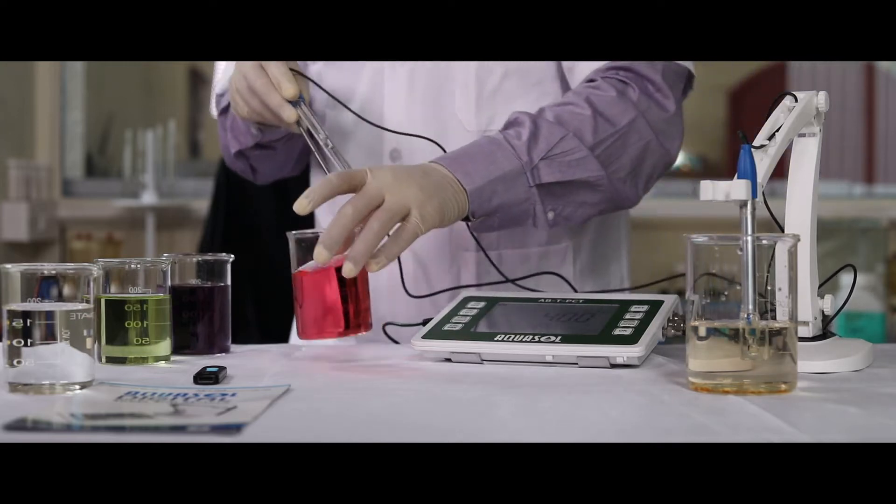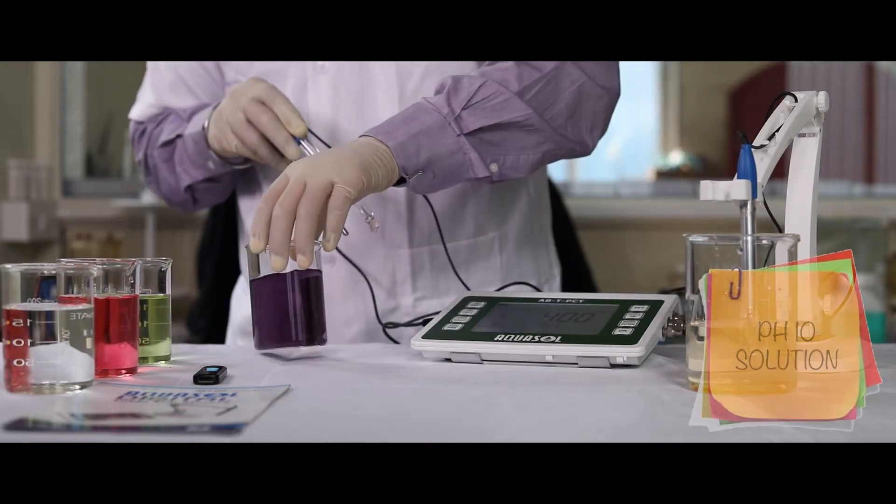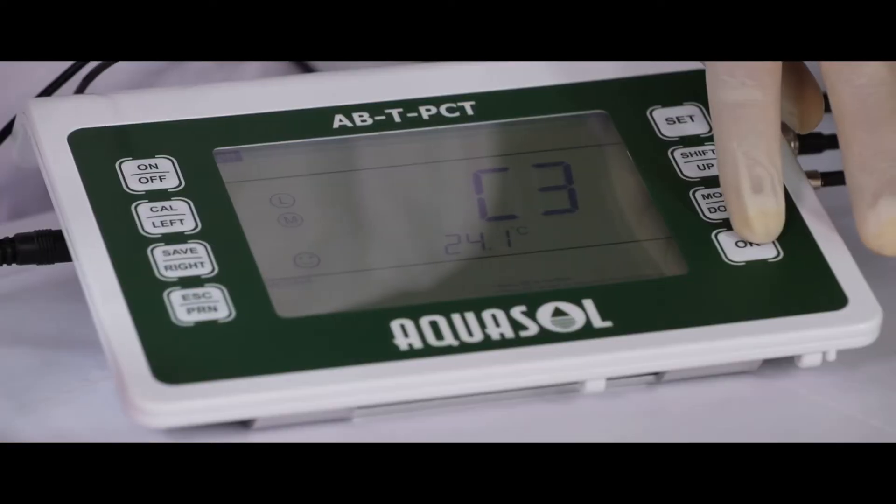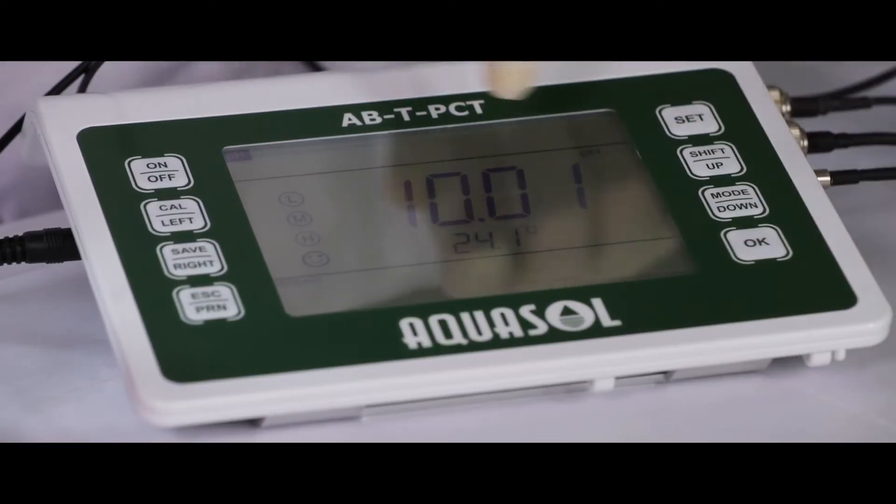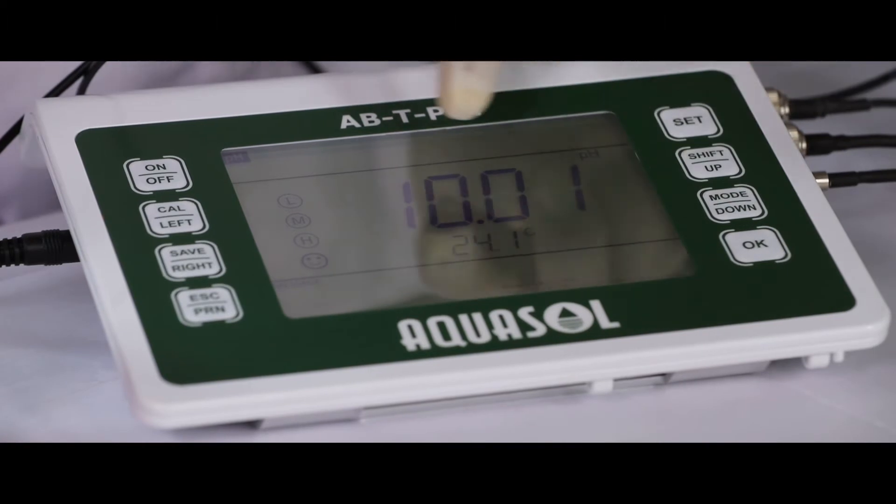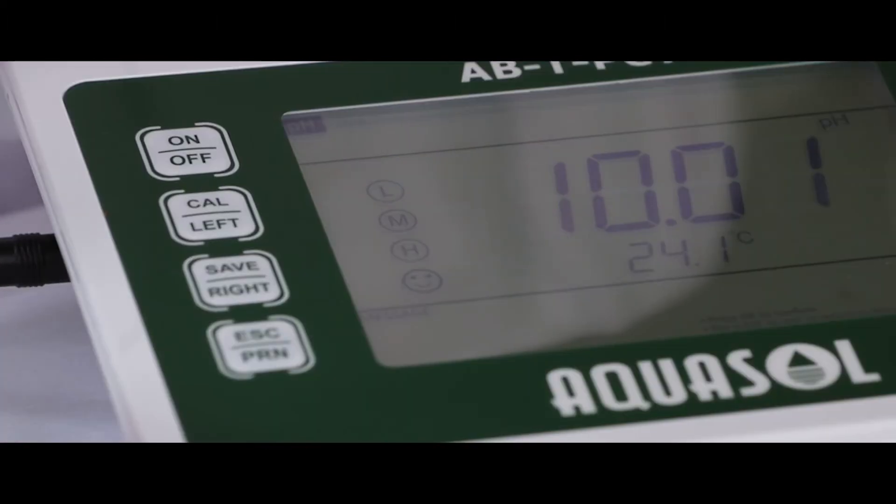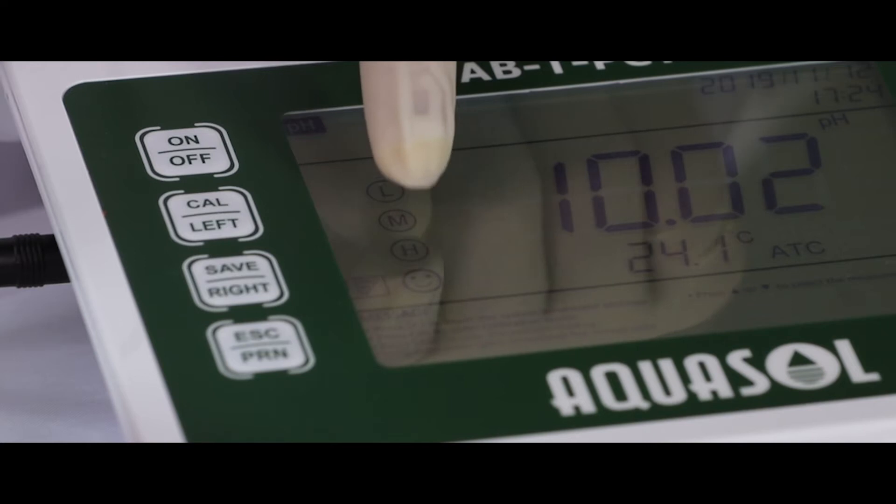Repeat the process for C3 with pH 10 solution. If all your calibrations done right, then the meter will display L, M, H.